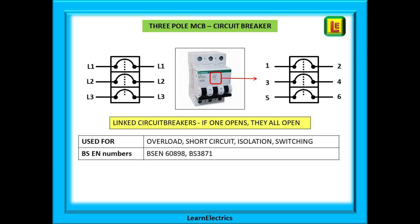MCBs are available as three pole devices too — one set of contacts for each of the three phases, linked so all three operate at the same time. We never run a three-phase machine or motor on just two phases as we can damage things by doing this; so if one phase has a problem and disconnects, all three phases disconnect together. As with the single pole variety, they can be used for overload and short circuit protection, functional switching, and can be locked off for safe isolation. The three pole MCB can be labeled L1, L2, L3 or numbered one to two, three to four, and five to six — a common numbering shown on the front of the MCB in industrial installations.